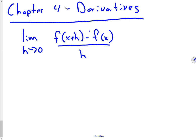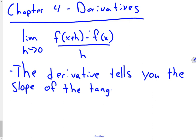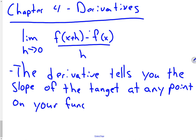Do you guys remember what the derivative gives you? The derivative tells you the slope of the tangent at any point on your graph, at any point on your function. Remember, we'd plug a point in, see what the answer was, and that would be your slope at that point.